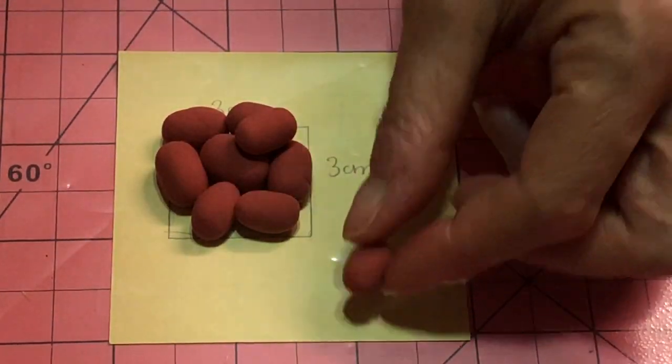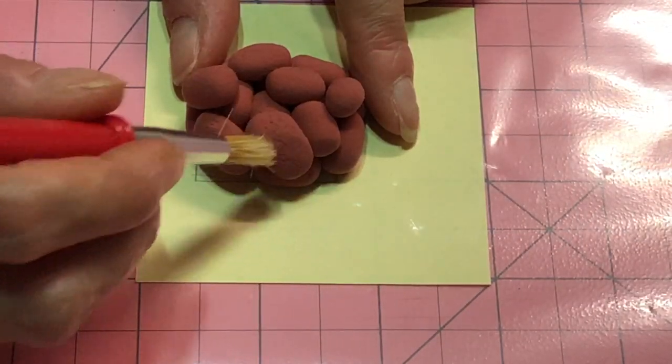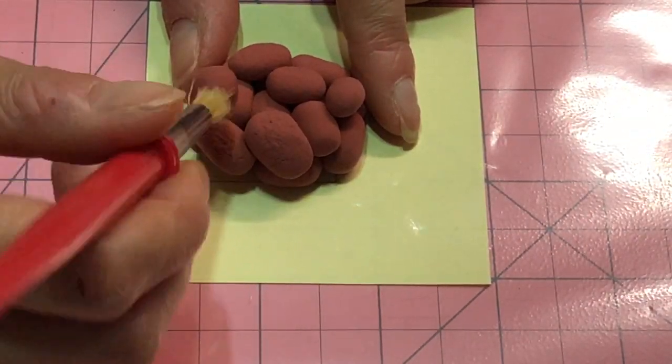Try varying how each piece of chicken is laid so it looks more natural. To texture, we used a hard bristled paint brush.